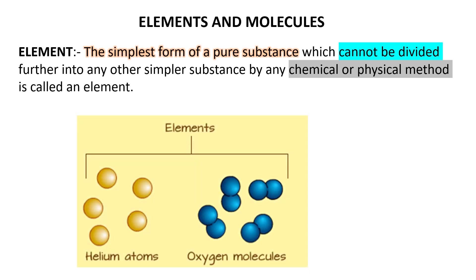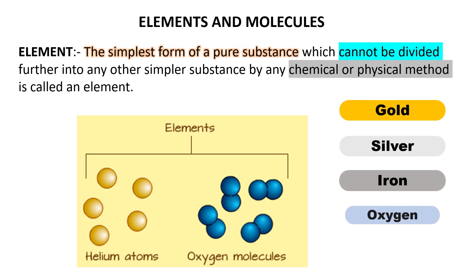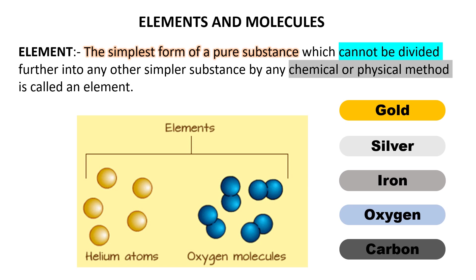You cannot divide them further into a simpler form. For example, element oxygen will remain oxygen only — it cannot become nitrogen or carbon. Helium will remain helium only; it will not become carbon, nitrogen, or oxygen. So it is the simplest form of a pure substance which cannot be divided by any physical or chemical method. Examples of elements are gold, silver, iron, oxygen, and carbon, and many more. There are nearly 118 known elements.